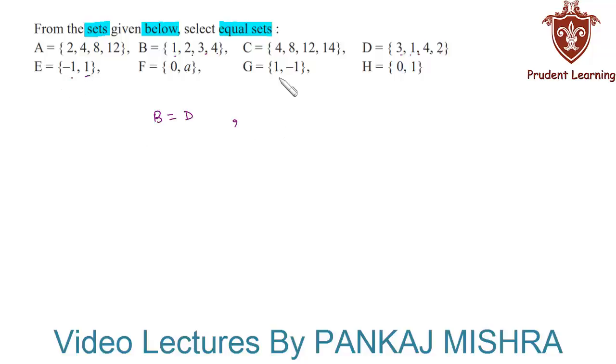are same as that of the elements of set G, so we will say that set E is equal to set G. Hence our answer is set B is equal to set D and set E is equal to set G.